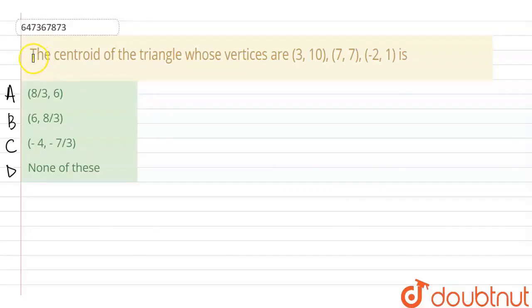Hello everyone, the given question here is: the centroid of the triangle whose vertices are (3,10), (7,7), and (-2,1) is? The options are: A) (8/3, 6), B) (6, 8/3), C) (-4, -7/3), and D) none of these.